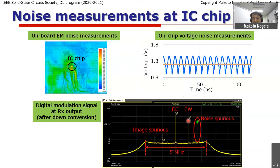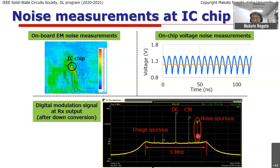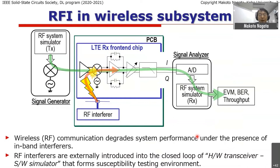We also see other spurious. One is a CW carrier wave — an intentional tone added to the modulation signal. But we also have a noise spurious, which is coupled noise from digital circuits on the board or on the die. If we have spurious in band, we see degradation of wireless communications. The system-level metric can be used for evaluation of noise impact on the wireless communication system.